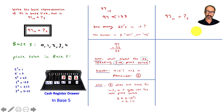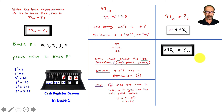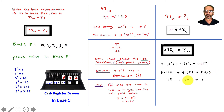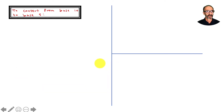So 97 base 10 in base 5 is 342 base 5. Now if someone gave you 342 base 5 and asked you to write it in base 10, it's simple: use the place values. Three times 5 to the second, plus four times 5 to the first, plus two times 5 to the zero. Add them up: 75 plus 20 plus 2 equals 97. One way uses dividing, one way uses multiplying.